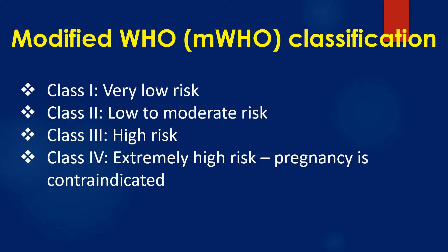According to the modified World Health Organization classification, obstetric patients with heart disease are classified into Class 1 – very low risk, Class 2 – low to moderate risk, Class 3 – high risk, and Class 4 – extremely high risk, where pregnancy is contraindicated.